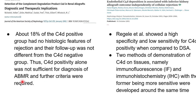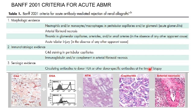New findings emerged: even if C4d is present in a renal biopsy specimen, it may not correlate with the amount of rejection. These studies led to a further update. As of 2001, the criteria for acute ABMR require three components: morphological evidence of tissue injury, immunocastrological evidence showing interaction of antibody and antigen, and serological evidence — the presence of donor-specific antibody in the blood.